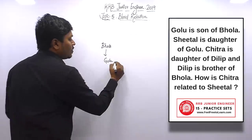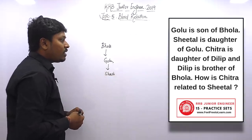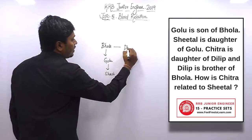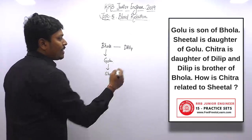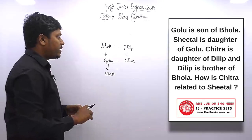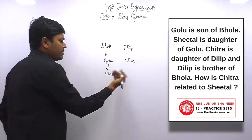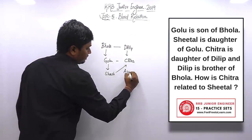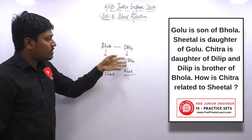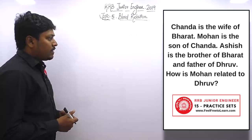Question number fifteen: Golu is the son of Bola. Sheetal is the daughter of Golu. Chitra is the daughter of Dilip. Dilip is the brother of Bola. The question is: how is Chitra related to Sheetal? Dilip is Bola's brother, so they are one family. From Sheetal, Bola is the grandfather, and Dilip is Bola's brother. Chitra is Dilip's daughter — making Chitra Sheetal's aunt. The answer is aunt.